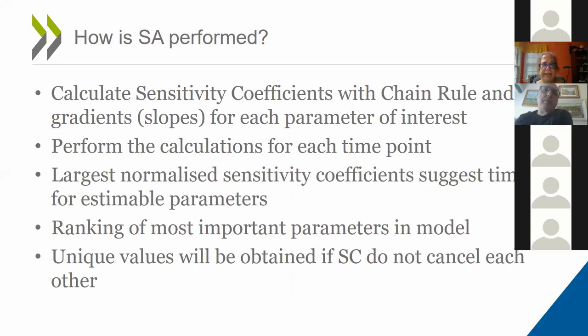To summarize, the calculation of sensitivity coefficients can be performed either with percent change as an approximation or with more analytical approaches using the chain rule. These calculations can vary with time and suggest a maximum range where experiments can be performed to obtain unique estimates. The largest values represent the best opportunity to estimate these parameters. One of the most important applications of this analysis is to rank the parameters in the model to tell us which ones are the most important and where we should concentrate our efforts. The theorem summarizes that if the parameters do not cancel each other, then we get unique estimates.